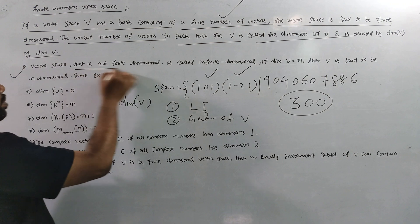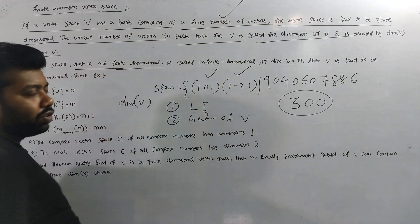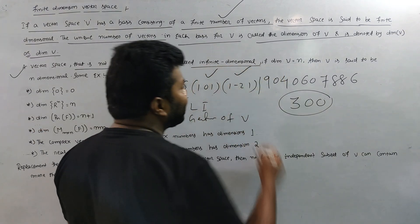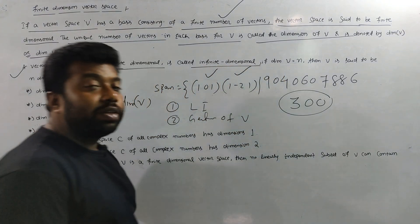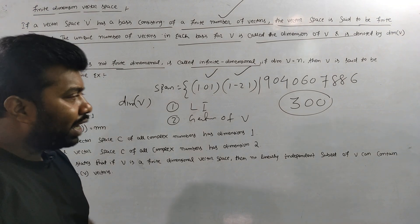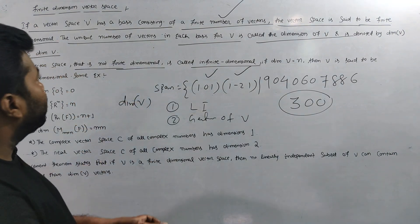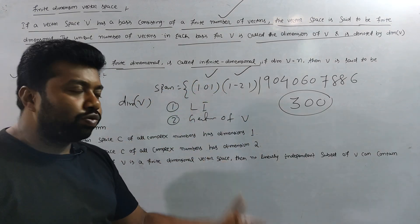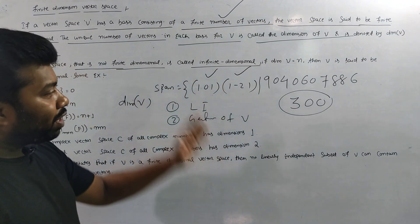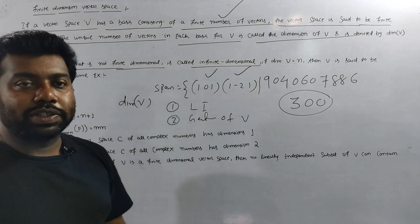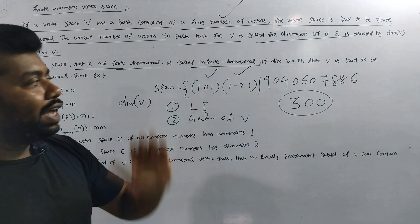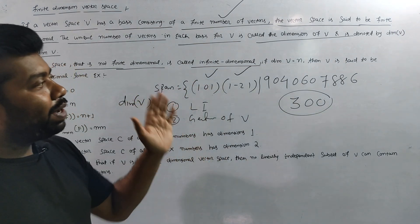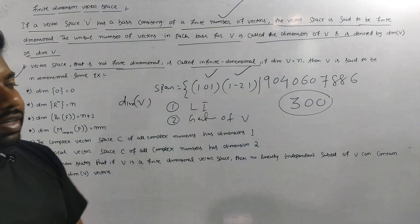A vector space which is not finite dimensional is, obviously, infinite dimensional. If the basis is created with an infinite number of vectors, then it is an infinite dimensional vector space.